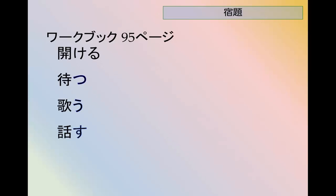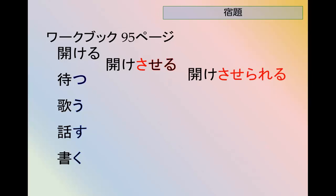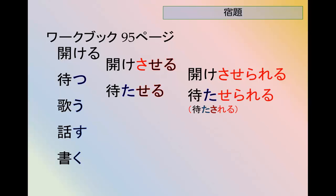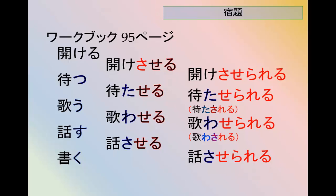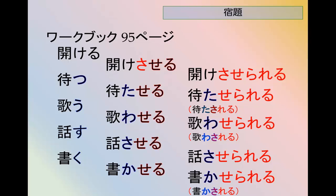From your workbook, let's go through page 95. Akeru → akesaseru → akesaserareru. Matsu → mataseru → mataserareru, or shorter: matasareru. Utau → utawaseru → utawaserareru, or utawasareru — both are the same. Hanasu → causative hanasaseru → causative passive hanasaserareru. Note it doesn't make sense to shorten verbs ending in す. Kaku → kakaseru → kakaserareru, or kakasareru.